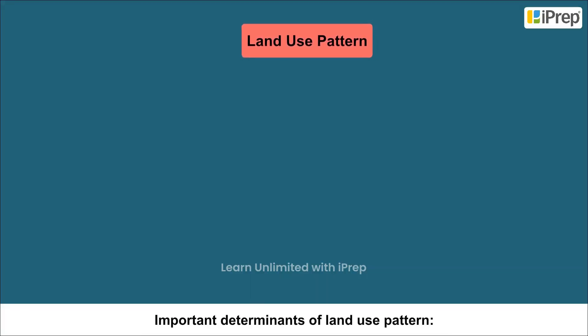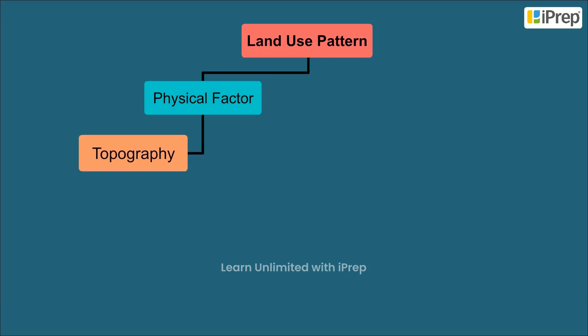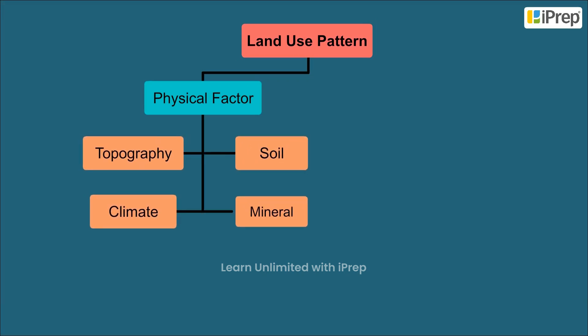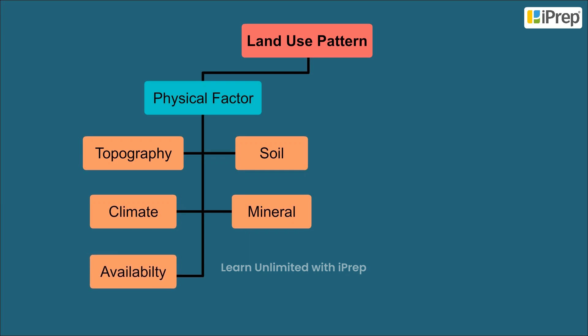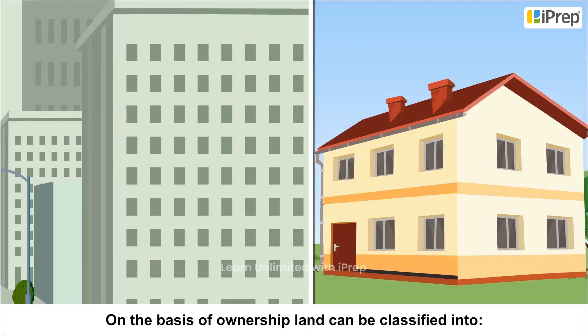Important determinants of land use pattern include physical factors such as topography, soil, climate, mineral availability, and water, as well as human factors such as population and technology.